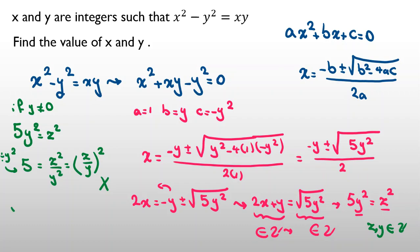So, the only possible case is when y equals 0. So, if we replace y equals 0, x squared minus y squared equals xy. If y is 0, then x squared is 0, and also we conclude x is 0. So, we found only one answer here, which x and y both of them are 0.